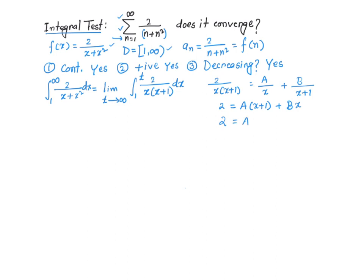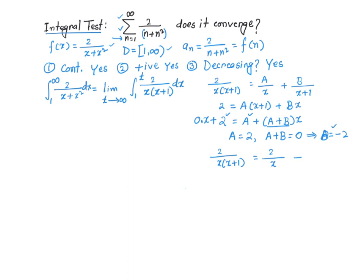Simplifying, that gives A plus (A plus B) times x. Comparing coefficients on both sides: A equals 2 because A is the constant term, and A plus B must equal 0 since there is no x term on the left. So B equals negative 2. Therefore, 2 over x times x plus 1 equals 2 over x minus 2 over x plus 1.